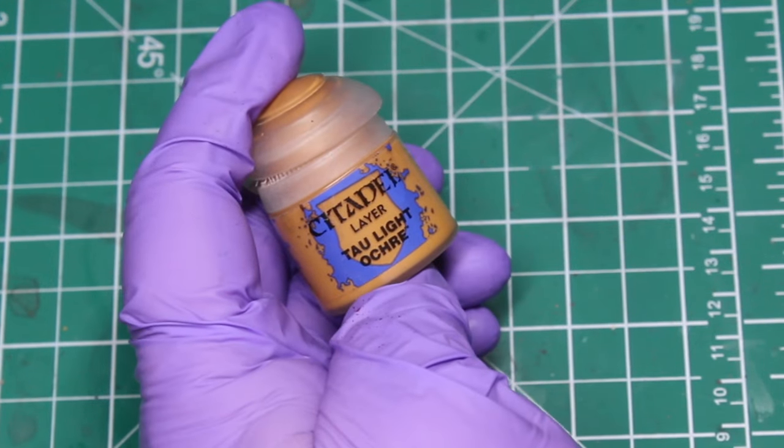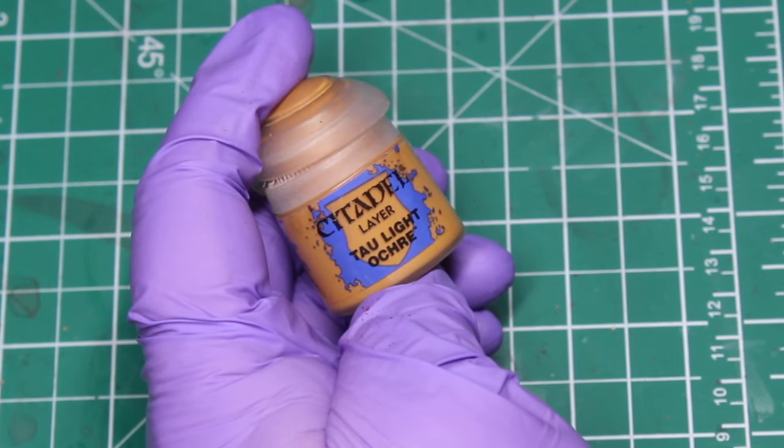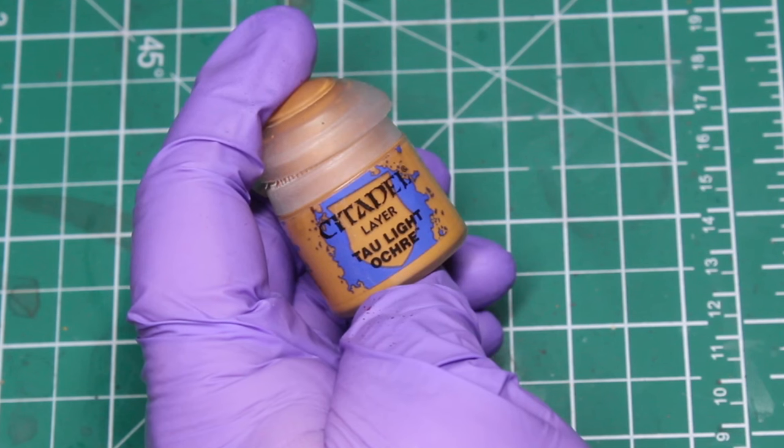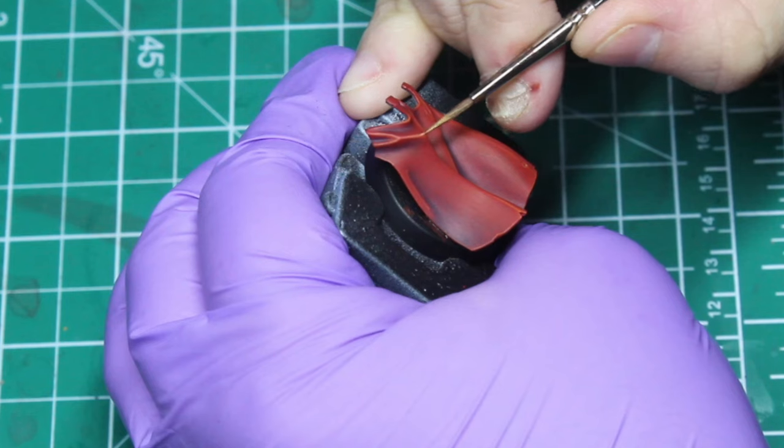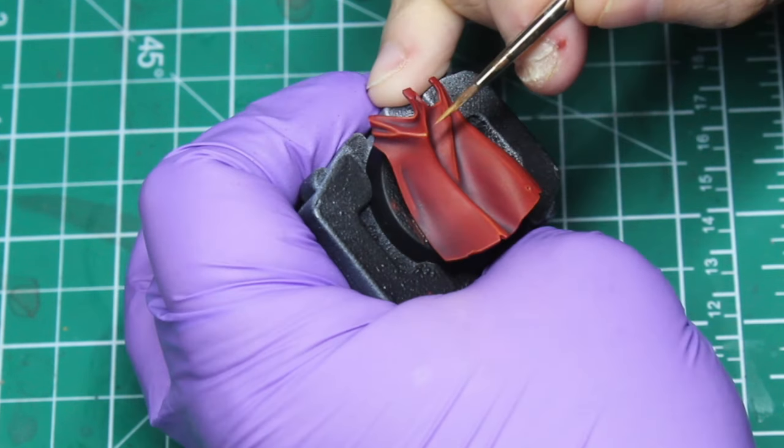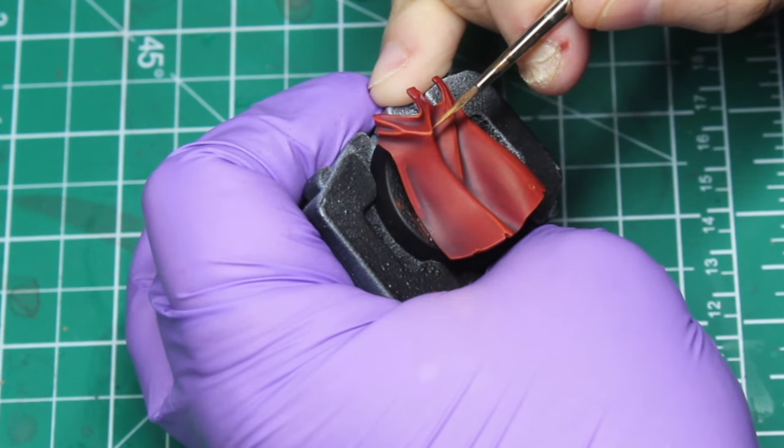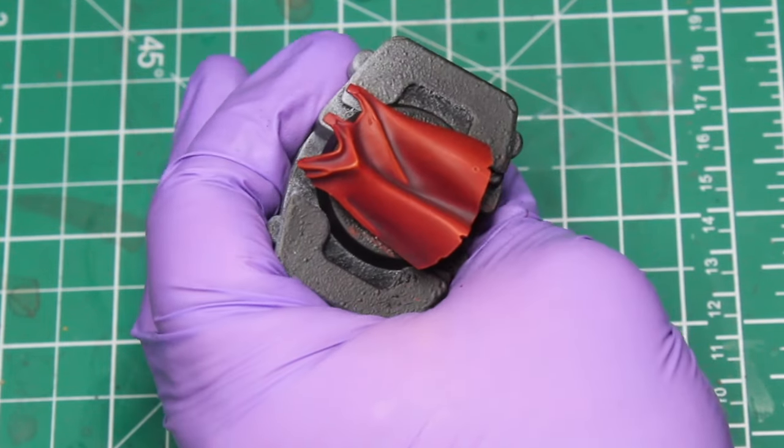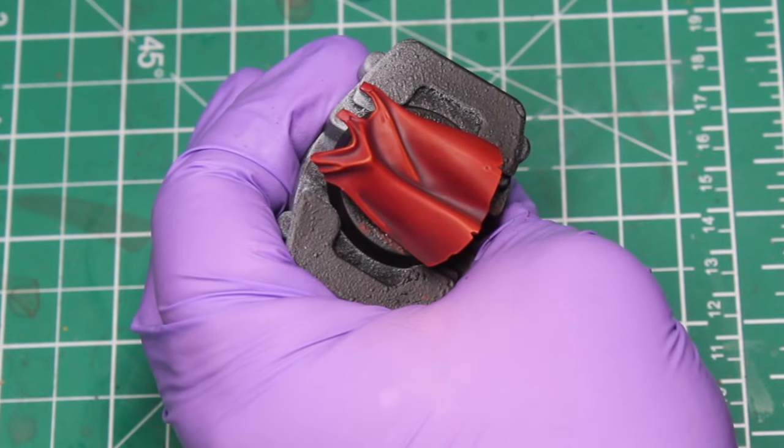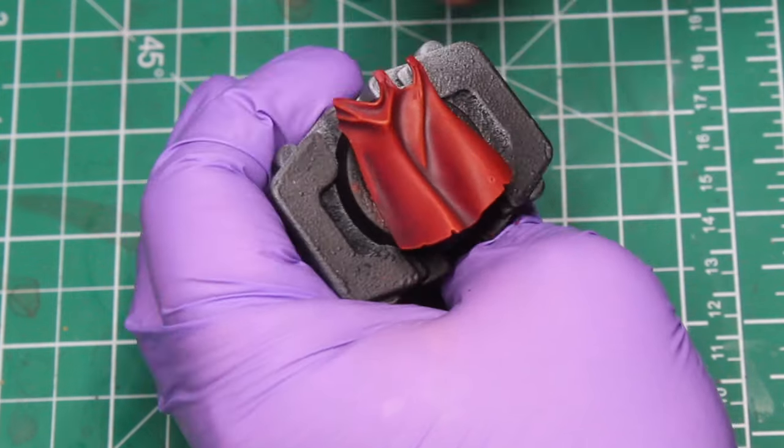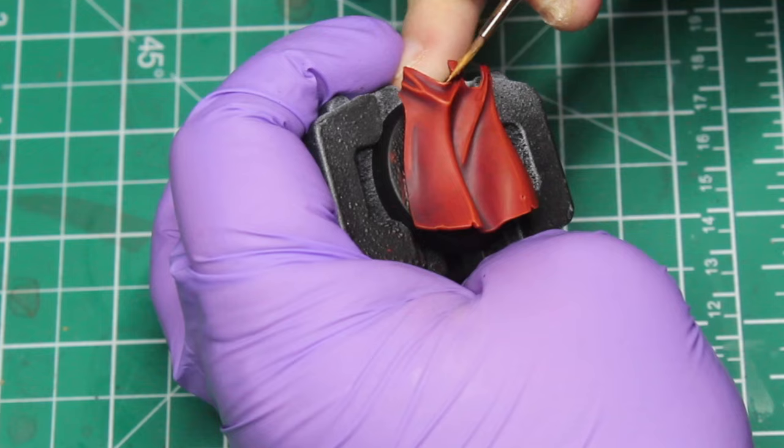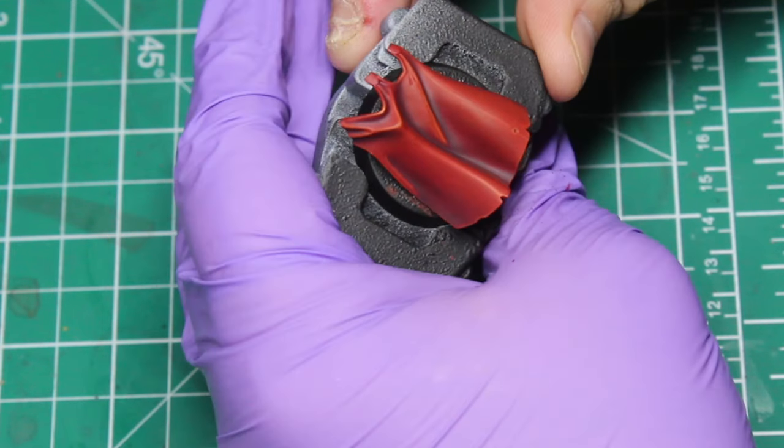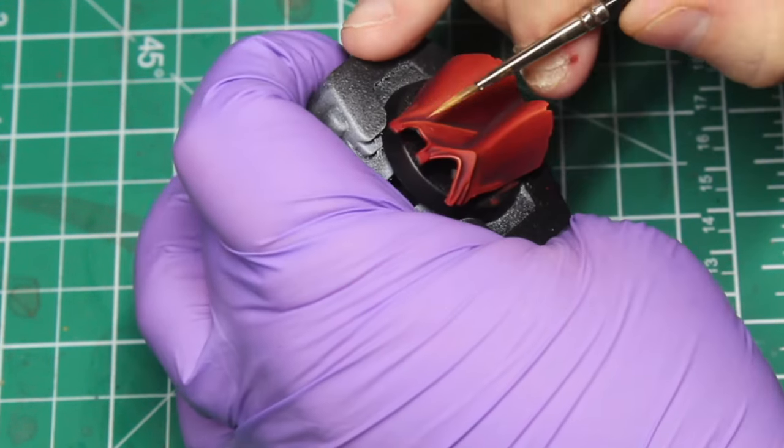Finally, what you're going to be doing is the final edge highlight which is going to be using Tau Light Ochre, again thinned down with a little bit of water. You're basically wanting this to be nothing more than on the most extreme prominent points of the folds. As you can see just there, there's the little bit at the top and there's a couple of little bits on the sort of top parts of the bottom folds. This is your extreme final highlight. This is kind of going to make it pop and really make those areas stand out a lot more.